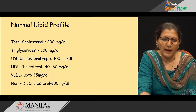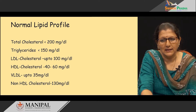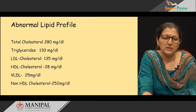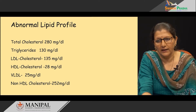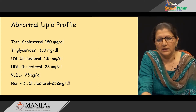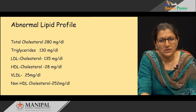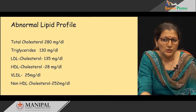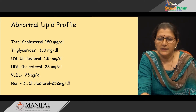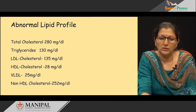These are the normal ranges. In this patient, total cholesterol was 280 milligrams per deciliter, triglycerides were in the normal limit, LDL cholesterol was also high at 135 milligrams per deciliter, HDL cholesterol was reduced to 28 milligrams per deciliter, VLDL was 25 milligrams per deciliter, and non-HDL cholesterol was 252 milligrams per deciliter. This picture shows increased total cholesterol, increased LDL cholesterol, decreased HDL cholesterol, with normal VLDL.